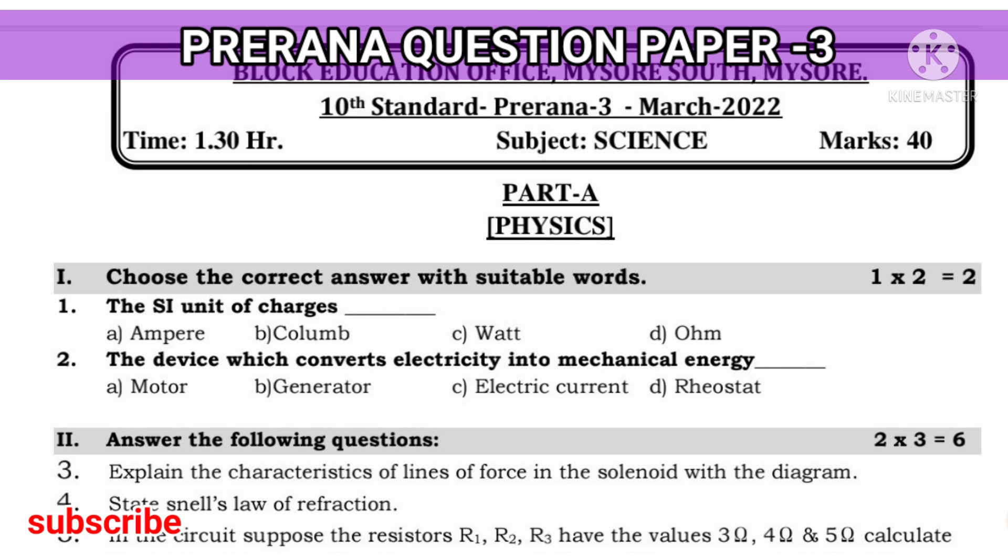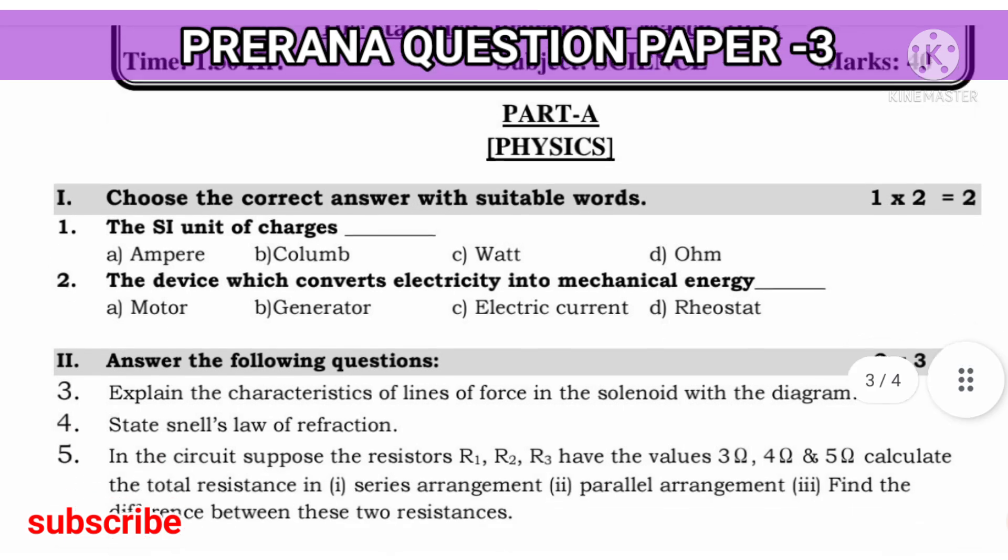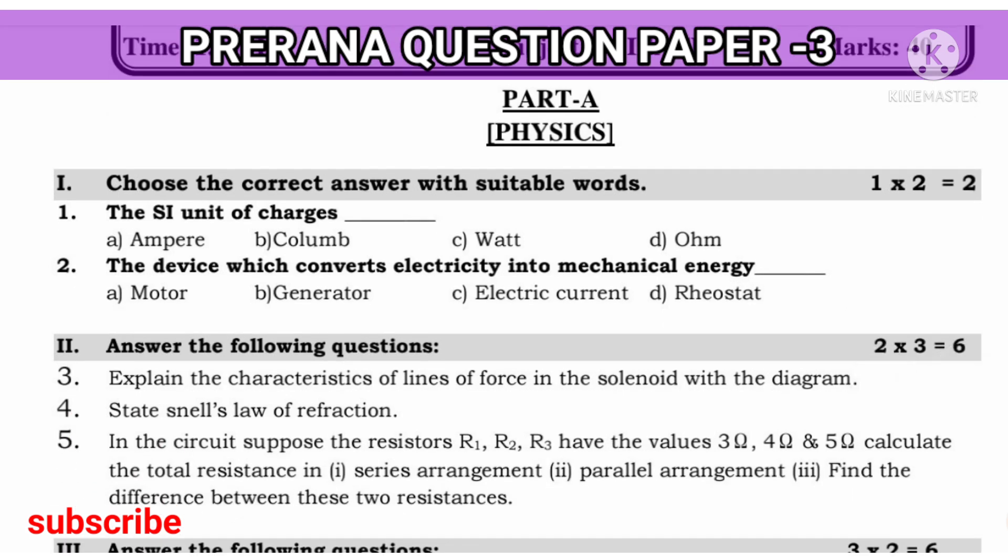Firstly, this paper is for 40 marks children. Physics part questions, choose the correct answer with the suitable words. The first question is, the SI unit of charge. So, the SI unit of charge is actually, the right answer is option B, that is coulomb.